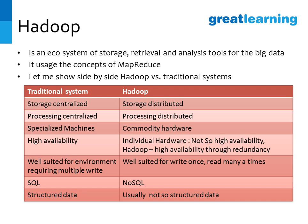Traditional supercomputers are provided in a high-availability mode, but commodity hardware cannot guarantee that. So Hadoop provides high availability through redundancy — it replicates each piece of data to another PC, making two copies, so that if one computer out of a hundred fails, the data is available on another computer and processing can continue. Traditional systems are well suited for environments requiring multiple writes, whereas Hadoop is better suited for write-once, read-many scenarios — such as satellite data collected once and then analyzed repeatedly.